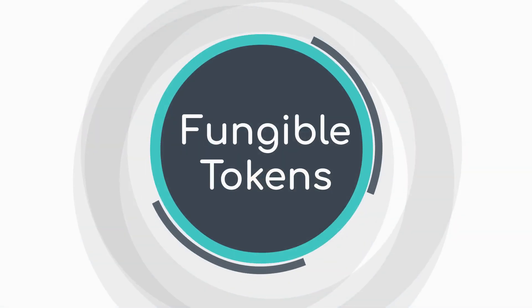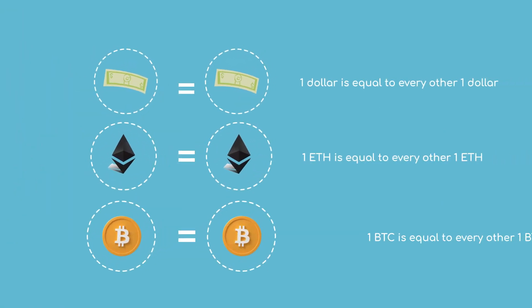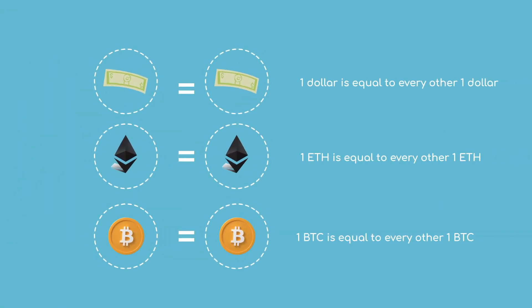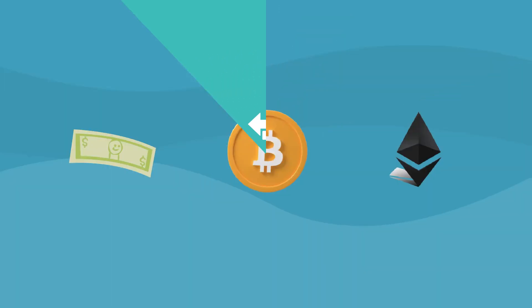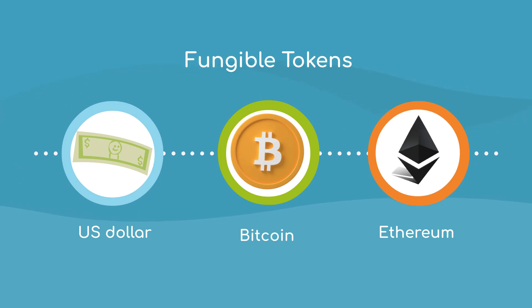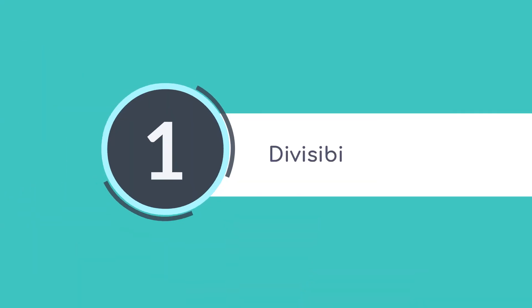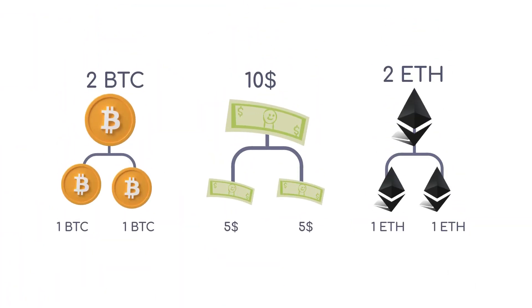Fungible tokens — interchangeability: Fungible tokens are interchangeable with one another on a one-to-one basis. Each unit of a fungible token is identical in value and can be exchanged for another unit without any difference. A common example is traditional currencies like the US dollar, or cryptocurrencies like Bitcoin or Ethereum.